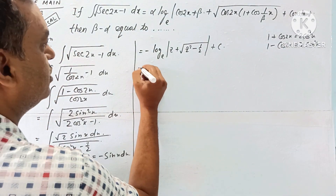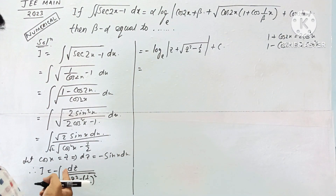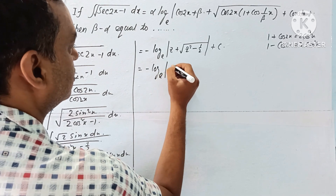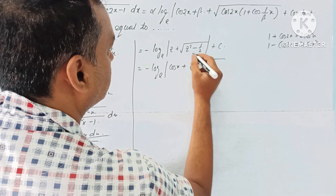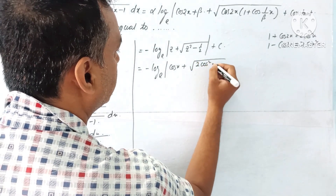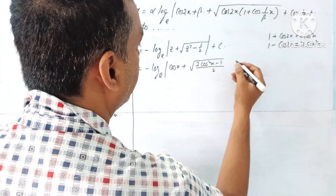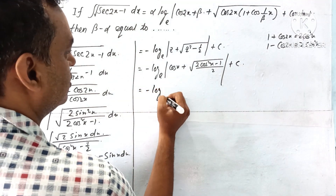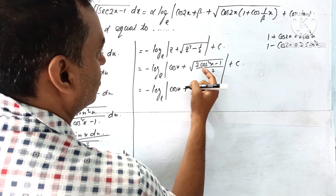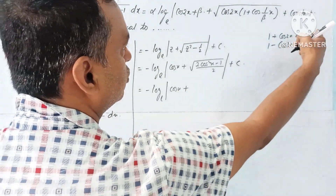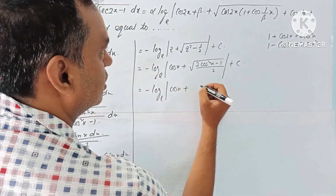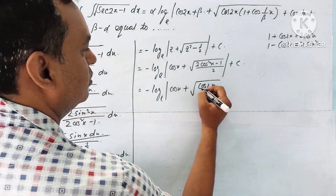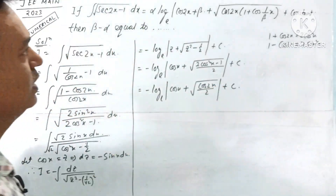Now substituting back z = cos x. So I = -log|cos x + √(2cos²x - 1)/√2| + C. Since 2cos²x - 1 = cos2x, this becomes -log|cos x + √(cos2x)/√2| + C.